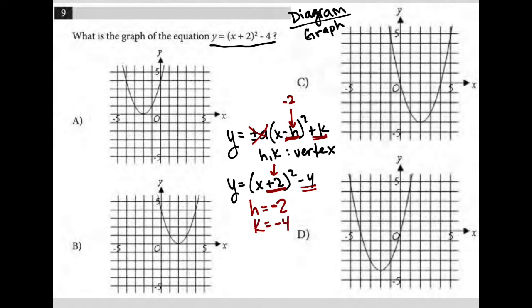So which parabola has a vertex at the point negative 2 comma negative 4? On choice A, the vertex looks like it's at negative 2 comma 0, so A is gone. For choice B, the vertex is at positive 2 comma 0, so B is gone. For choice C, the vertex is at 2 comma negative 4 — much closer, but also incorrect.